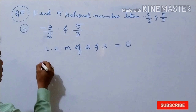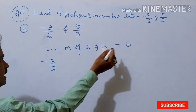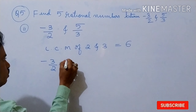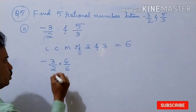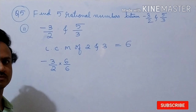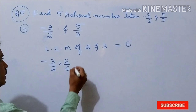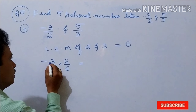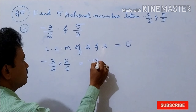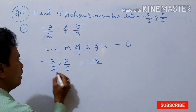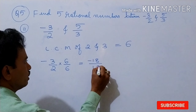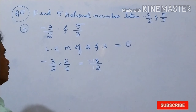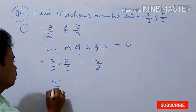Now here minus 3 by 2. We got LCM as 6. So the numerator should take 6 and denominator should also take 6. Then this is equal to: 3 times 6 is 18, so minus 18 divided by 2 times 6 which is 12.